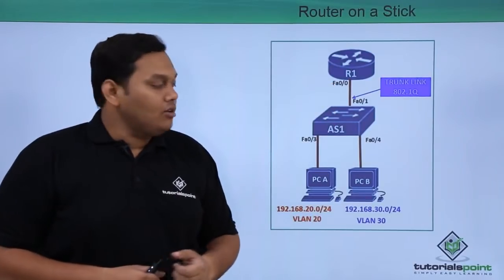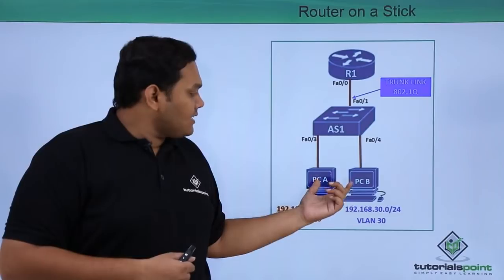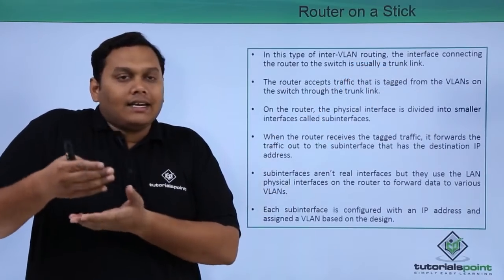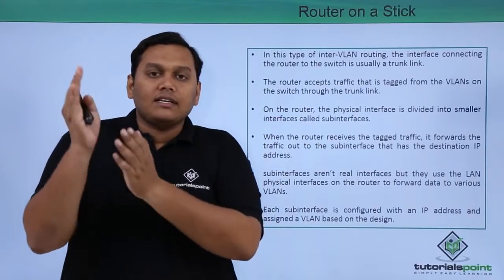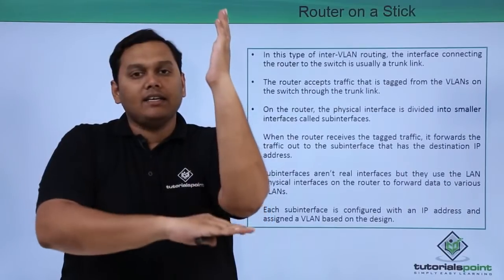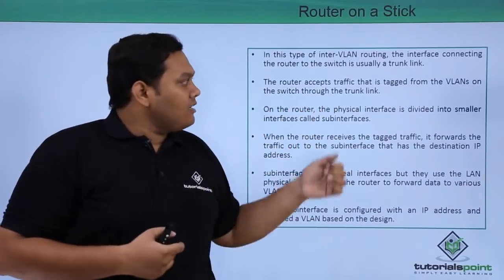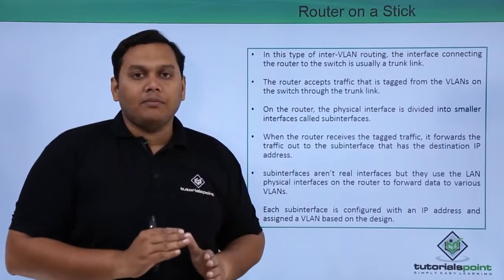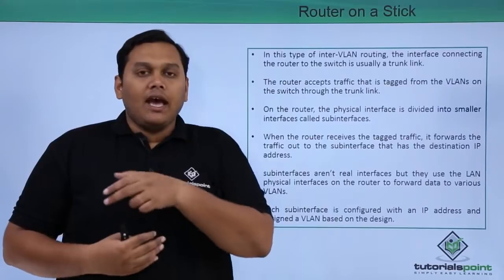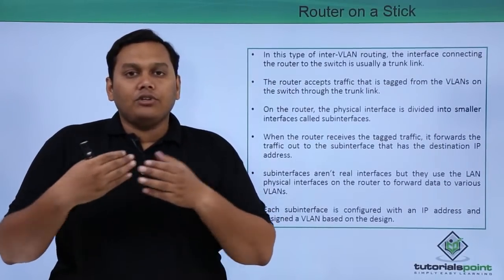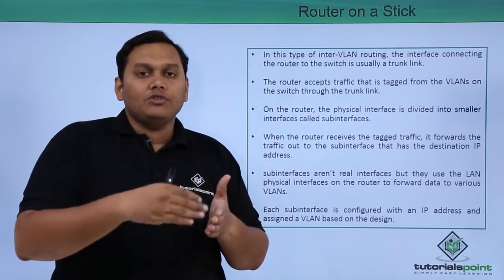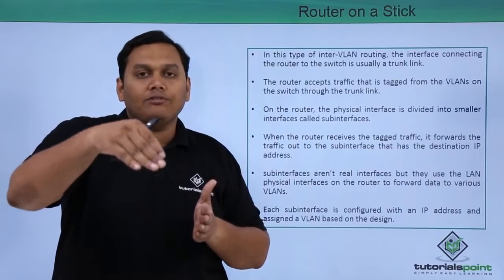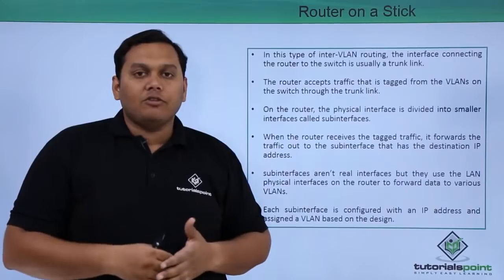AS1 switch has a trunk link connected to the router's interface R1. This interface is FA0/0, and FA0/1 are the interfaces connected to the PCs. For inter-VLAN routing, the interface connecting the router to the switch uses a trunk link. The router accesses traffic tagged from the VLANs on the switch throughout the trunk link. The VLANs carry tagged information about destination IP addresses, and through the trunk link the router accesses this information and, based on the sub-interfaces configured, forwards to the interface with the IP address of the destined network. Through that sub-interface, using the physical trunk link, data traffic flows to the VLANs and reaches the destination IP address of the PC.